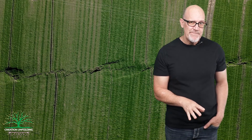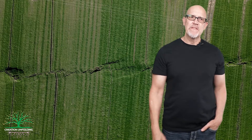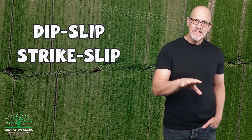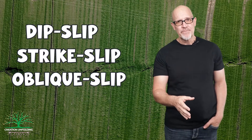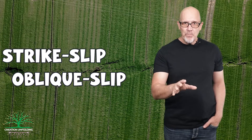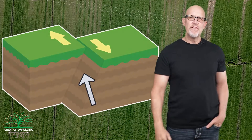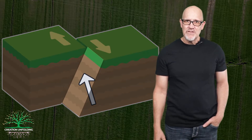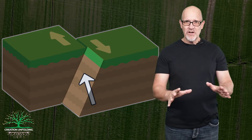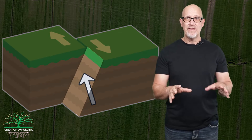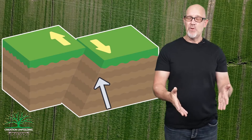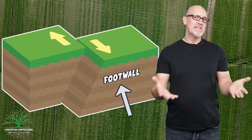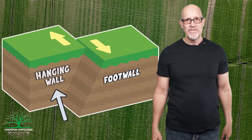If no movement occurs, we just call it a joint. There are three main kinds of faults: dip slip, strike slip, and oblique slip. A fault plane represents the surface of the fault itself. The two blocks separated by the fault plane have their own names: this block is called the foot wall, and this block is called the hanging wall.